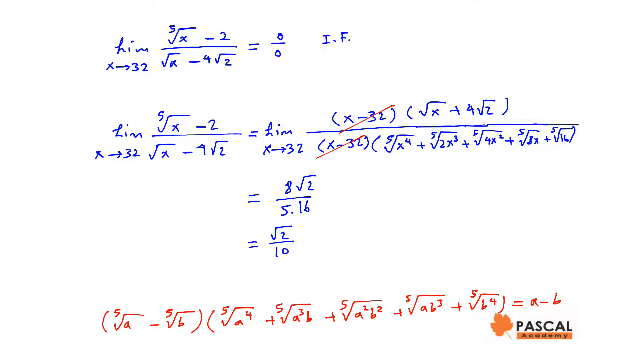By doing this, on the numerator, we have x minus 32. The 5th root of x to the power of 5 is x, and x minus 2 to the 5th power is 32.